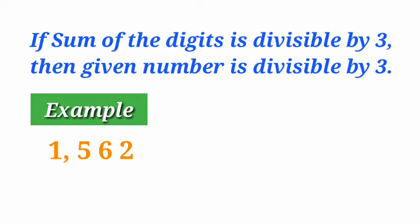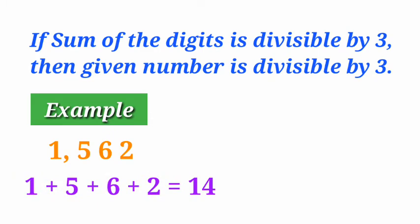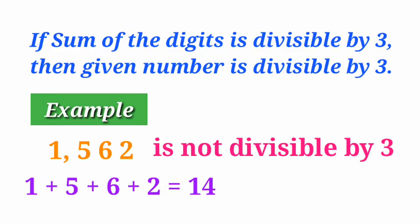Look at another example: 1562. To know if this number is divisible by 3, we have to add all the digits: 1 plus 5 plus 6 plus 2 is equal to 14. 14 is not divisible by 3 because it is not a multiple of 3. So the given number 1562 is not divisible by 3.